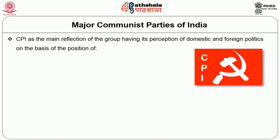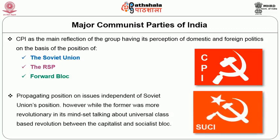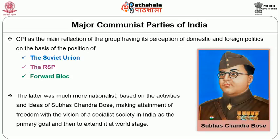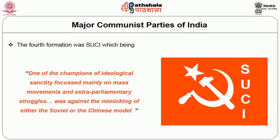CPI, as the main reflection of the group, had its perception of domestic and foreign politics based on the position of the Soviet Union, while the RSP and Forward Bloc propagated positions on issues independent of the Soviet Union's position. However, while the former was more revolutionary in its mindset — talking about universal class-based revolution between the capitalist and socialist blocs — the latter was much more nationalist, based on the activities and ideas of Subhash Chandra Bose, making attainment of freedom with the vision of a socialist society in India as the primary goal. The fourth formation was SUCI, which, being a champion of ideological sensitivity, focused mainly on mass movements and extra-parliamentary struggles, and was against the mimicking of either the Soviet or the Chinese model.